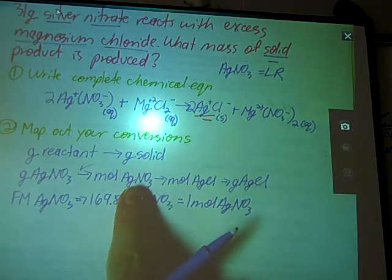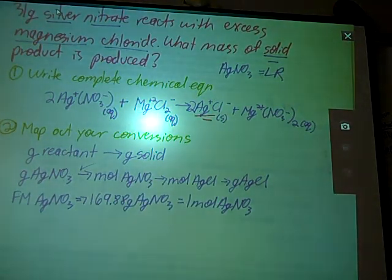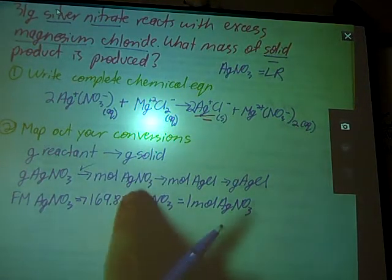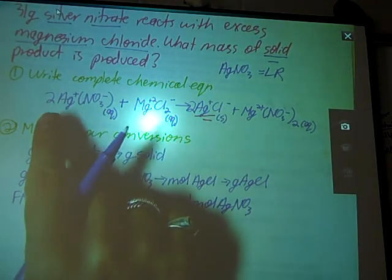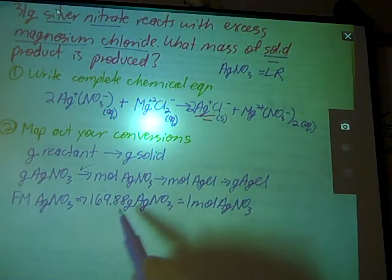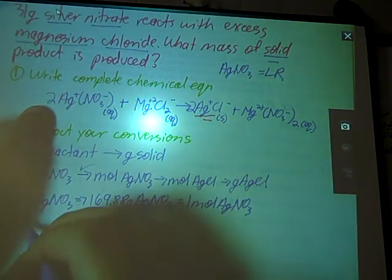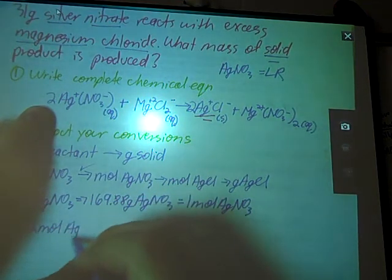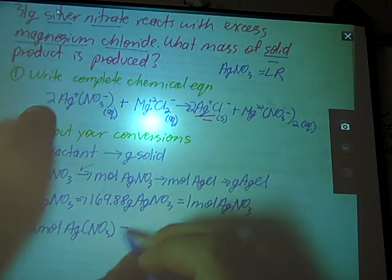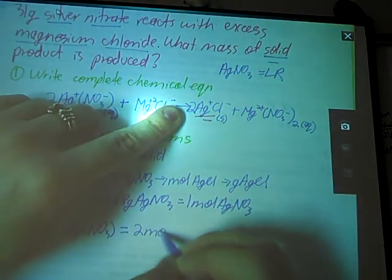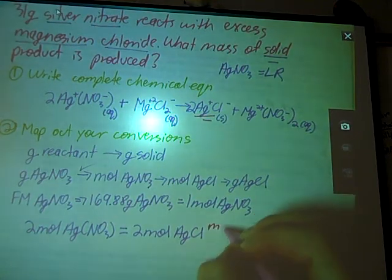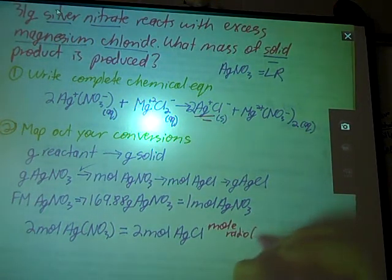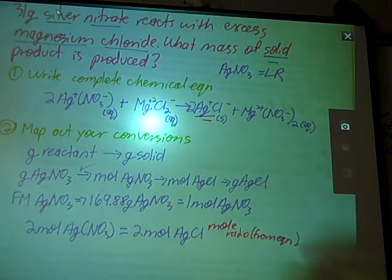Now we've got to talk about this one between moles of reactant and moles of product. If you remember back to our sandwiches analogy, that's going to use our mole ratio to convert between two of our compounds. Our mole ratio came from our balanced chemical equations, the coefficients, in fact, of our balanced chemical equation. So silver nitrate, there it is, two moles of silver nitrate is going to give me two moles of my solid. So this is my mole ratio from my equation.